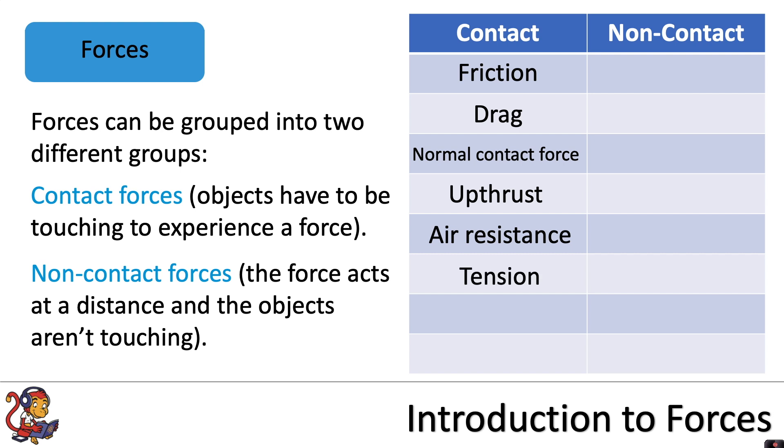Tension, which is a force in things such as ropes and wires, which will pull objects. Thrust, which is a force we often describe in terms of car engines providing thrust, and that will push an object forward. And lift is a force experienced by objects moving in air, as the air particles push upwards on the object.